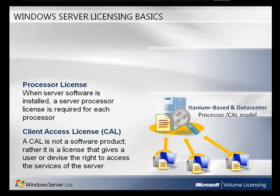Windows Server 2008 Itanium and Data Center versions use a processor CAL model. Every running instance of the server software requires the purchase of a Windows Server license for each assigned processor. A Windows Server 2008 client access license — a Windows CAL — is required in order to access and use the server software. For all Windows Servers except Web Edition, your CALs must be the same or newer version than the installed version of the server.